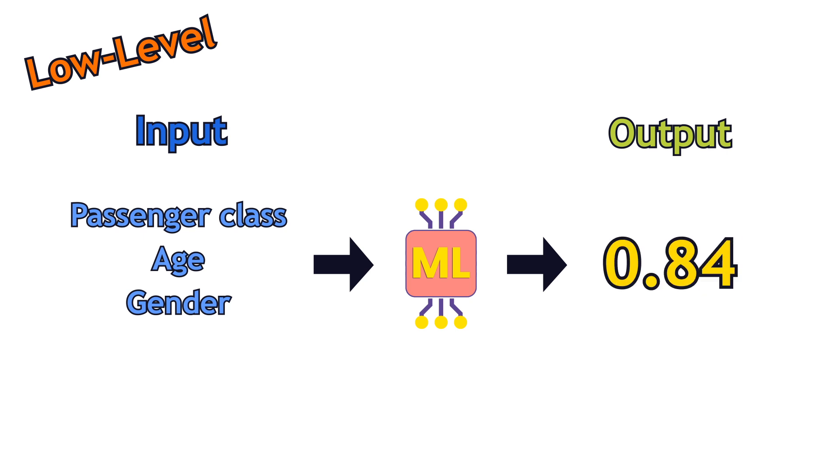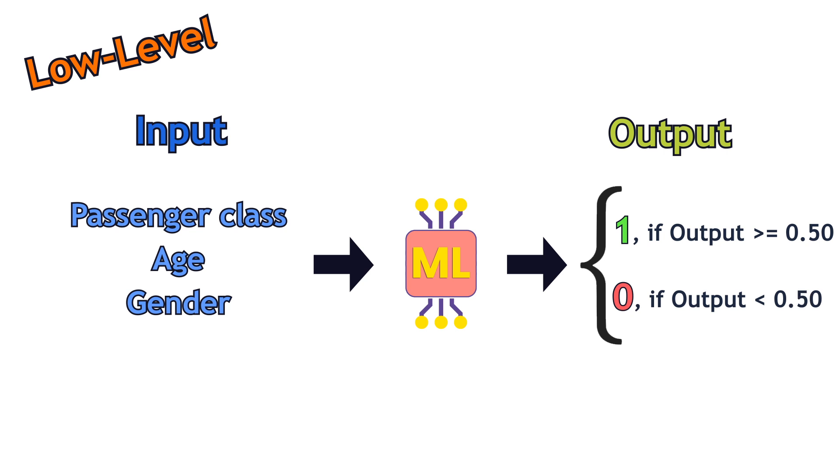A number higher than 0.5 would be assigned to survived, and a number lower than 0.5 would be assigned to not survived. Note that the threshold is subject to change. It can be any number in the range from 0 to 1.